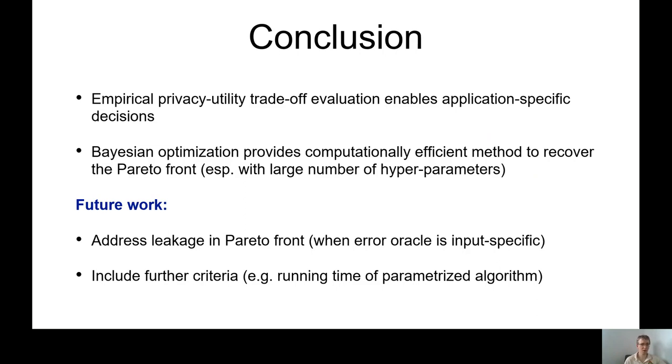A couple of extensions to this work that we can consider. First is, like I mentioned earlier, we would like to address the leakage in the utility oracle or error oracle that I've mentioned. And second, we could potentially introduce further criteria in the optimization. For example, running time of the algorithm. So now you may have a trade-off between running time, accuracy, and privacy. And there might be other measures as well. And we would like to hear some ideas around that.